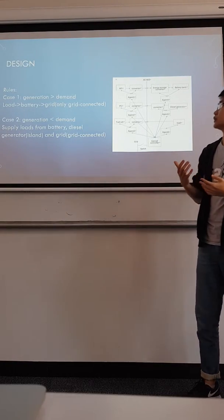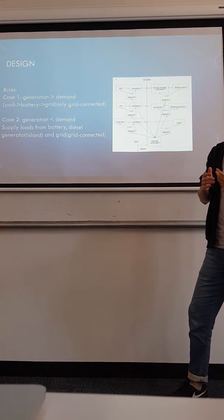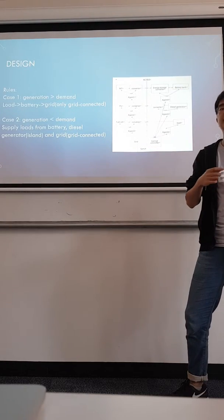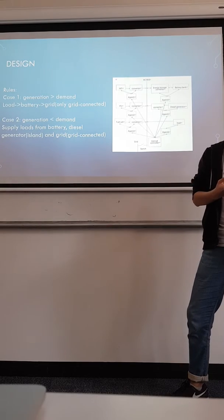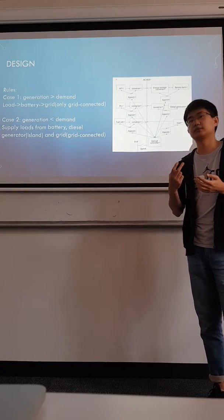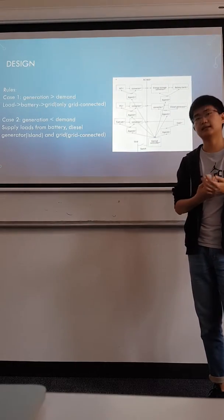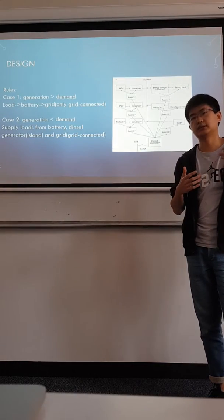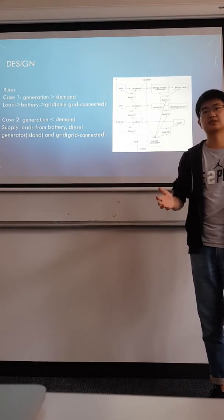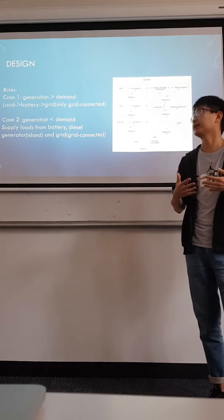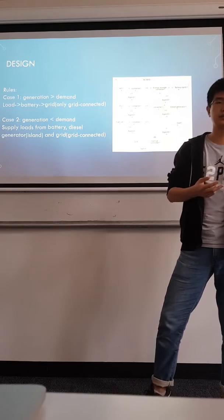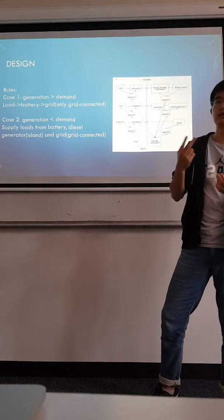The rules of the system are: if the total renewable energy generation is greater than the whole load demand, it will first supply the load. If there is some extra energy, it will charge the battery, and any extra power will be sold to the grid. When it's island mode, there will be no step 3.